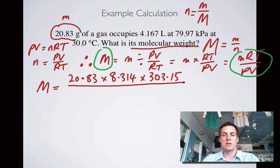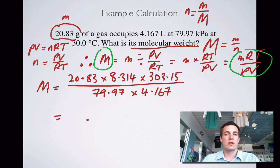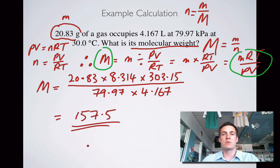And all that lot is going to be divided by the pressure times the volume, so that's 79.97 multiplied by 4.167. And if you do that on your calculator, you get an answer of 157.5. So every mole of that substance weighs 157.5 grams. So there's one kind of use for PV equals nRT that we'll see in year 12.